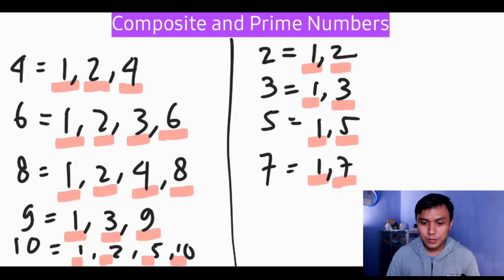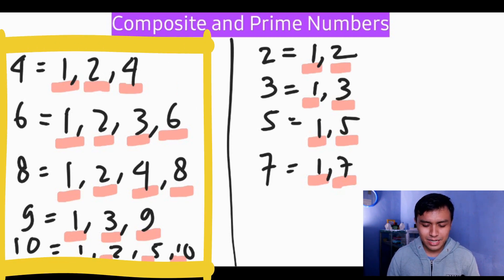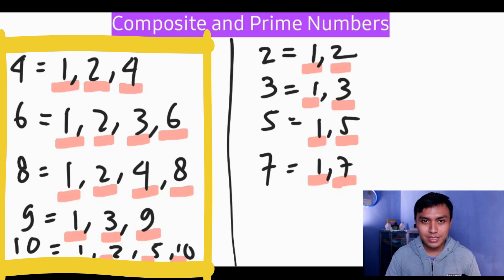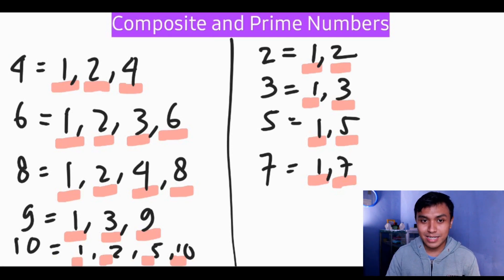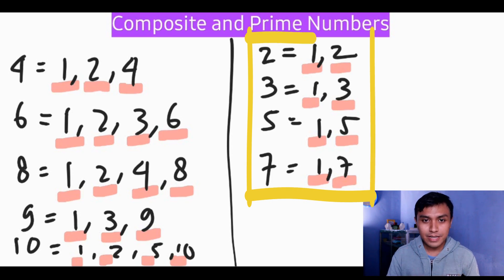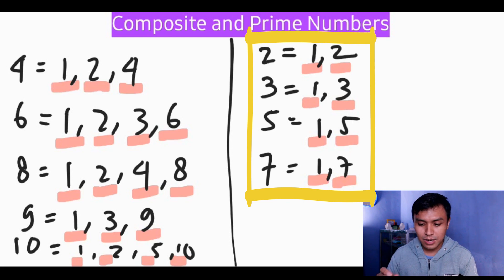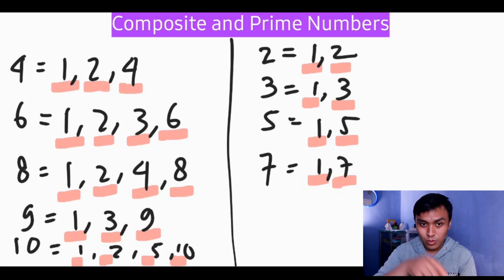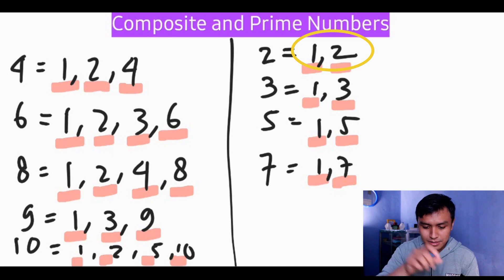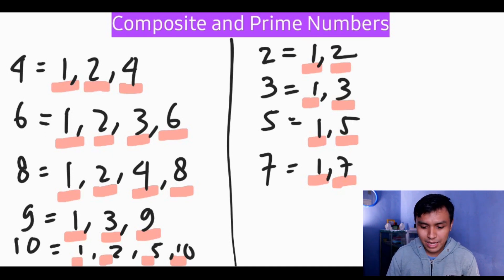We can conclude that composite numbers are all numbers with more than two factors, while prime numbers have exactly two factors — one and the number itself. For example, two has factors one and two, three has one and three, and the same applies to five and seven.